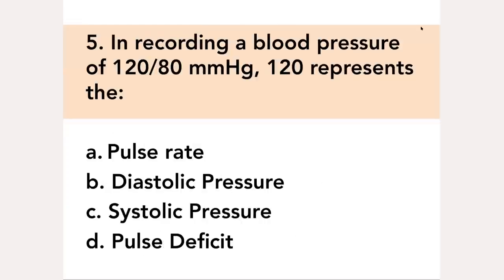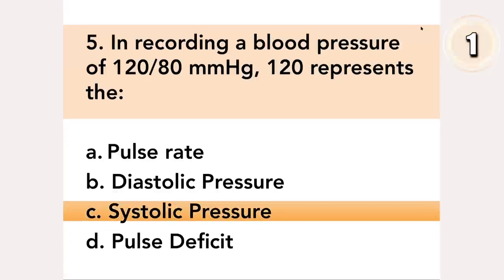In recording a blood pressure of 120 over 80 millimeters of mercury, 120 represents the: A. Pulse rate, B. Diastolic pressure, C. Systolic pressure, D. Pulse deficit. Answer: C. Systolic pressure.